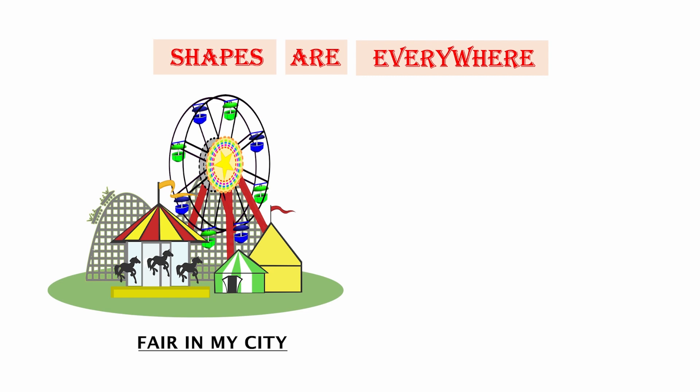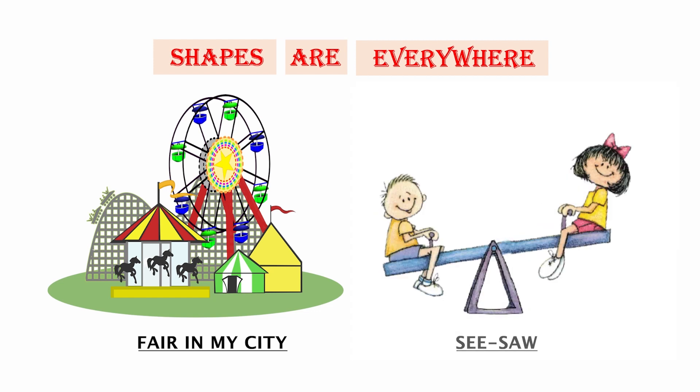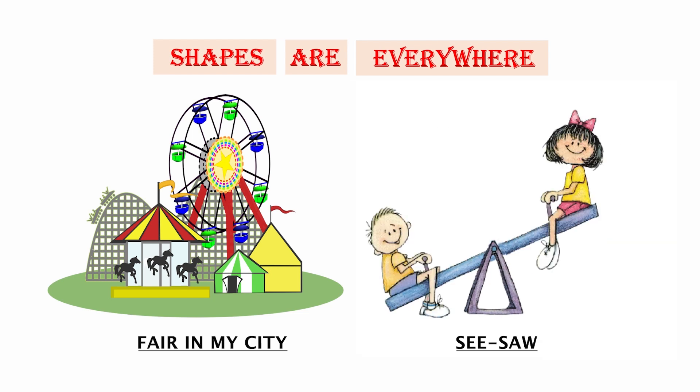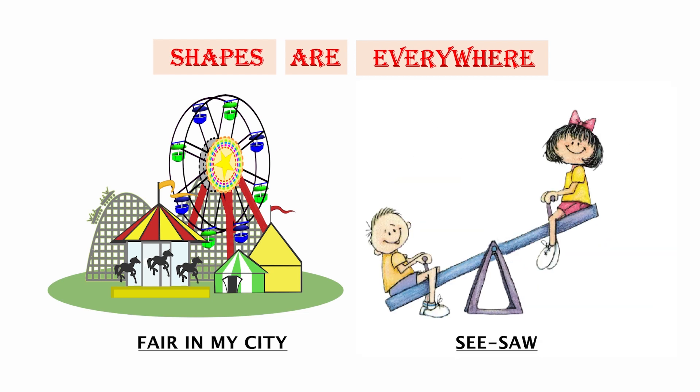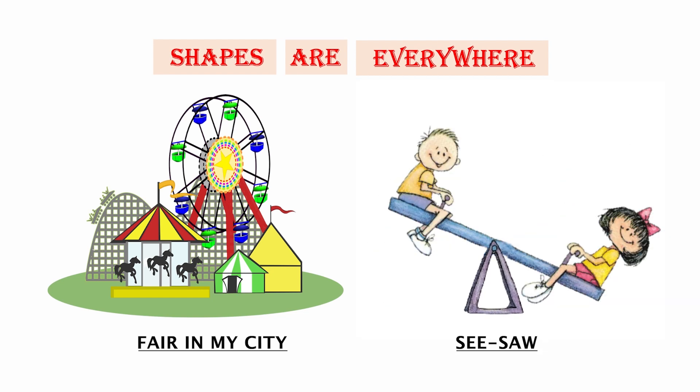Now let me take you to a fair going on in my city. Can you see differently shaped objects in the fair? Can you spot out the triangles, circles, and rectangle-shaped things there? Try to identify the shapes in the picture for yourself. Now, two kids are in the park on a seesaw — can you find shapes there too?